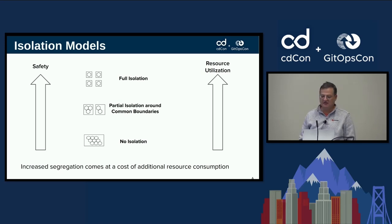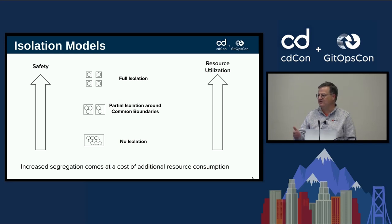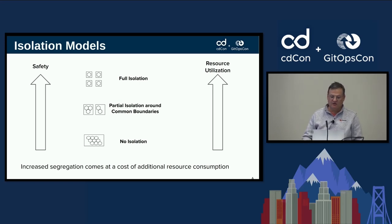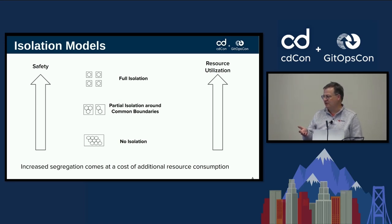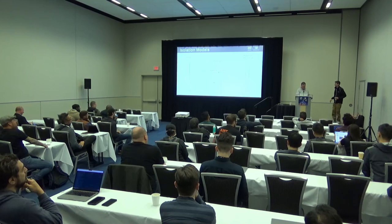Looking at these isolation models, there's a relationship between the safety being applied and the resource utilization. By resource utilization, I'm not just referring to memory and compute, but also the human resources involved in managing it — more isolation means more instances means more things people need to manage and maintain. As you increase isolation you increase safety, both from a security and mishap perspective, but you also increase resource usage. It's the same idea as handing out Jenkins instances to everybody.